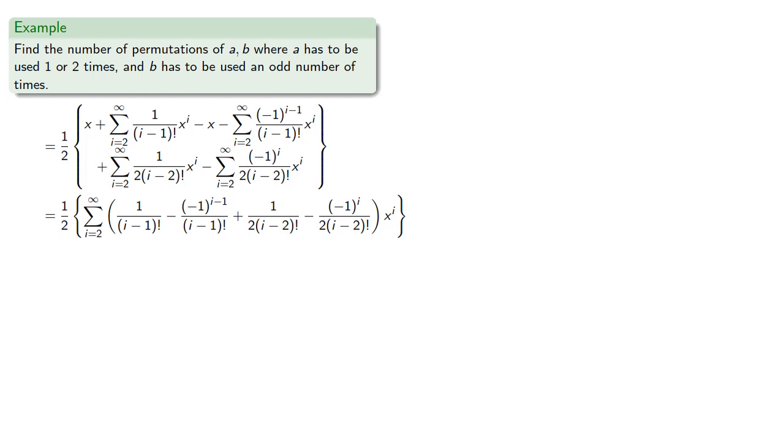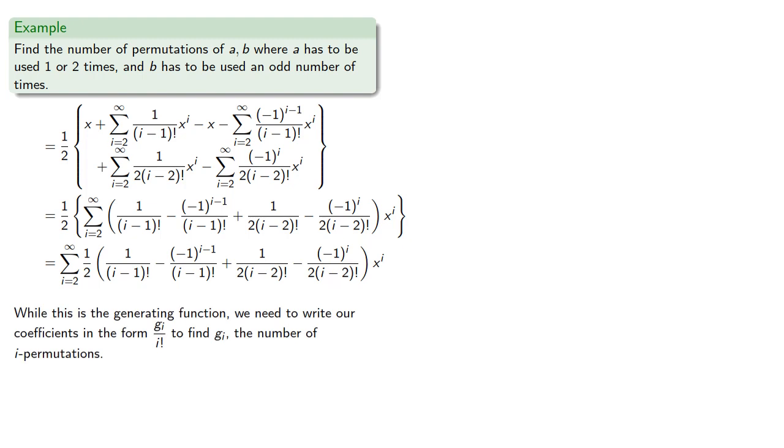And, now that we have a single series, let's move that factor of one-half into the summation. Now, while this is our generating function, we need to write our coefficients in the form g_i over i factorial, to find g_i, the number of i permutations. For that, we'll need to do a little bit more algebra.